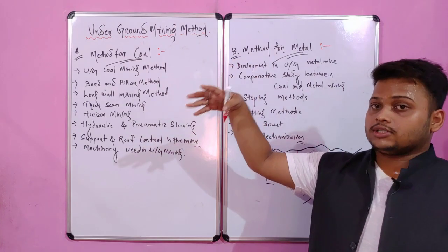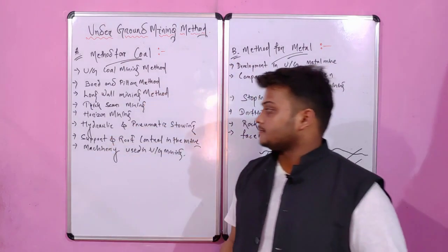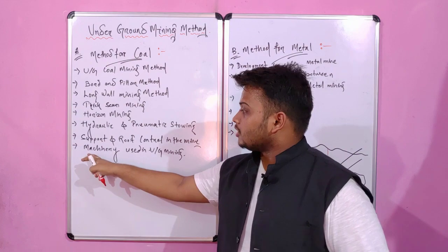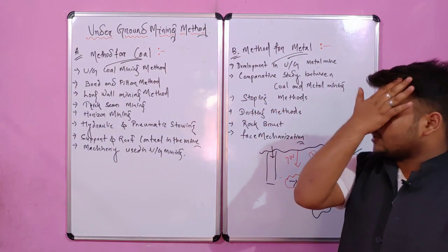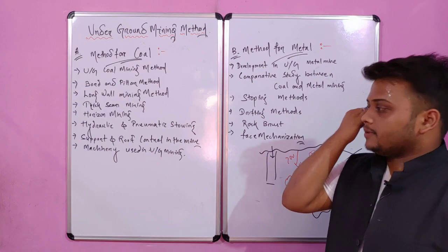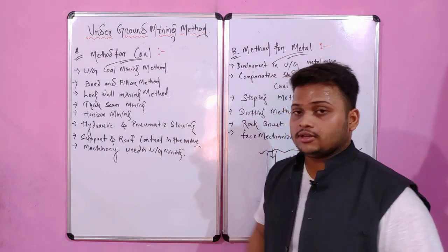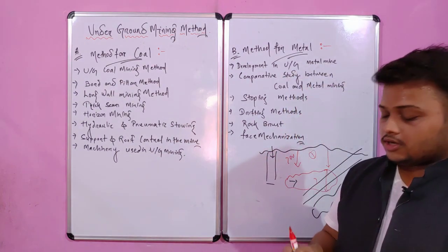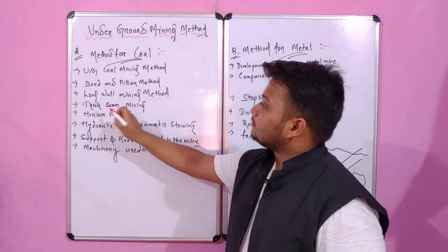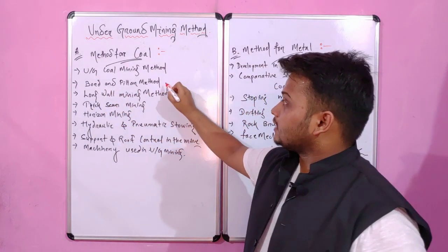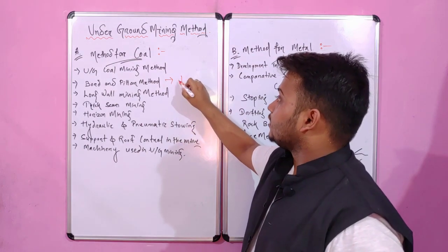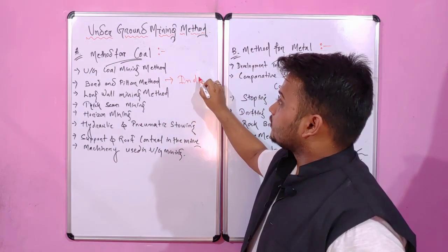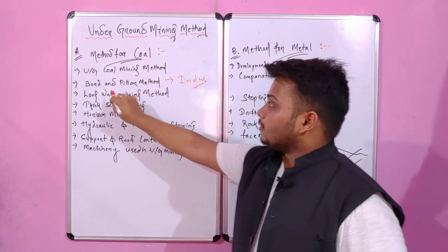Then comes machinery used in underground mining. In the extraction process there are several machines used to extract coal from underground. The bord and pillar method is basically used in Indian mining. In the Indian coal fields, the bord and pillar method is highly used.